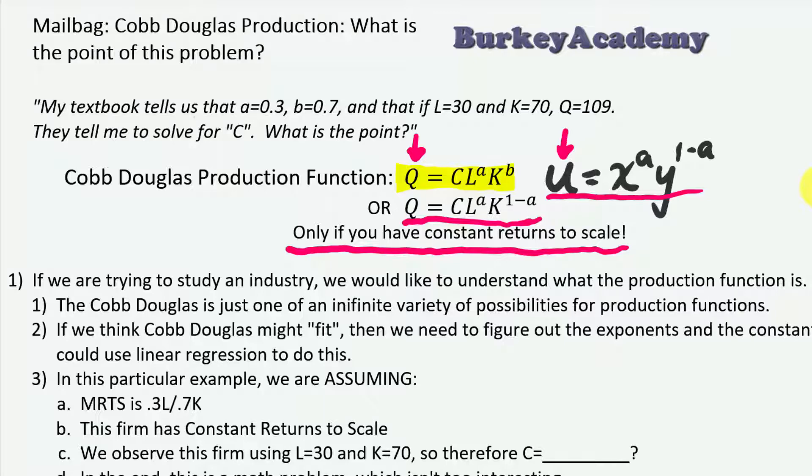Constant returns to scale means that if you double the amount of inputs, both inputs, you double the amount of output. If you multiply the inputs by five, you multiply the output by exactly five, no more, no less. That's kind of restrictive, and in the real world, yeah it happens, but you don't want to restrict it unless you know that's the case. In this case, we are assuming this is true apparently according to this textbook for this one problem.